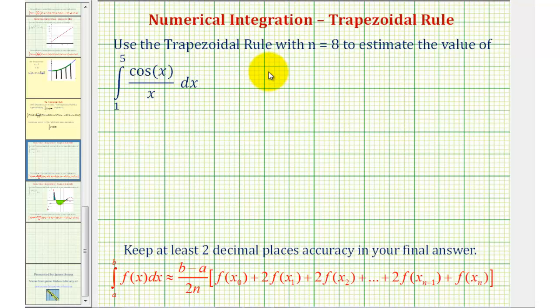Welcome to an example of numerical integration. We want to use the trapezoidal rule with n equals 8 to estimate the given definite integral. Because n equals 8, that means we'll be using eight trapezoids to approximate this definite integral.